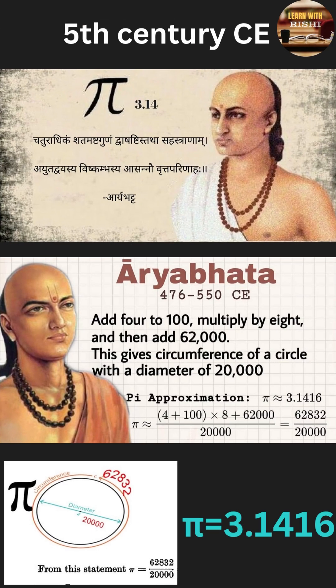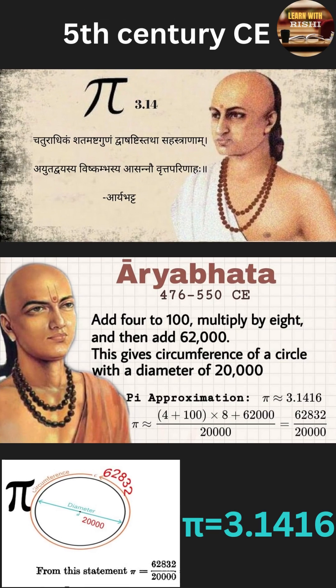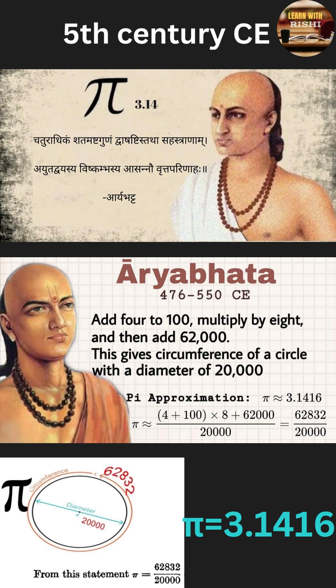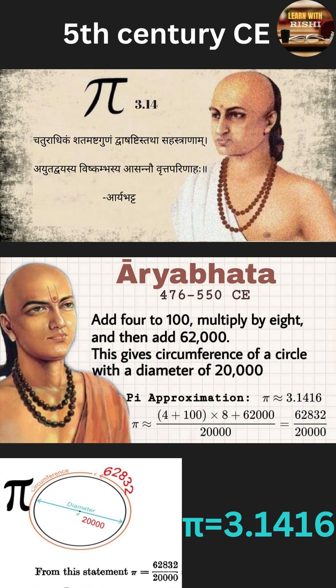In the 5th century CE, the Indian mathematician Aryabhata used the value 3.1416 in his calculations. In the second part of Aryabhata, it is mentioned: add 4 to 100, multiply by 8, and then add to 62,000 — this is approximately the circumference of a circle whose diameter is 20,000. It is remarkable that Aryabhata is the first Indian mathematician to have given the value of Pi correct to 4 decimal places.